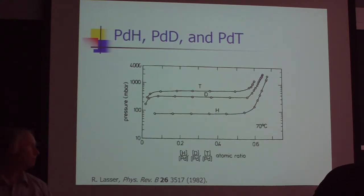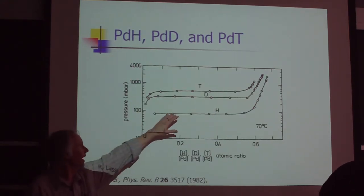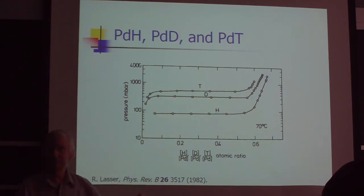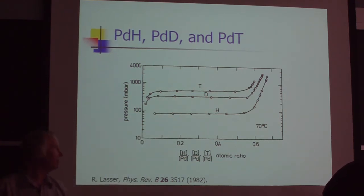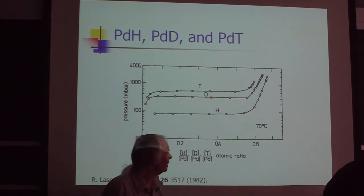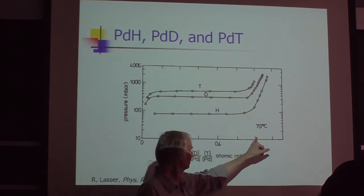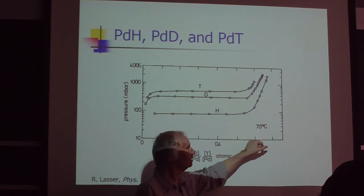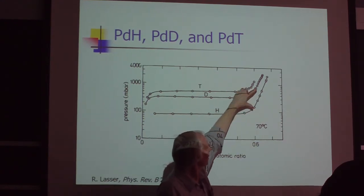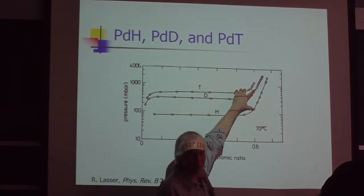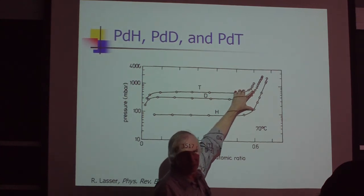Now there's an isotope effect. So hydrogen, deuterium, tritium. And if I look at this curve, if I want to get to my 0.7 loading, the curves don't quite go up there. If I go for 0.6 or something. Here's hydrogen, here's deuterium. I'm going to need much more pressure to get the deuterium in than the hydrogen.